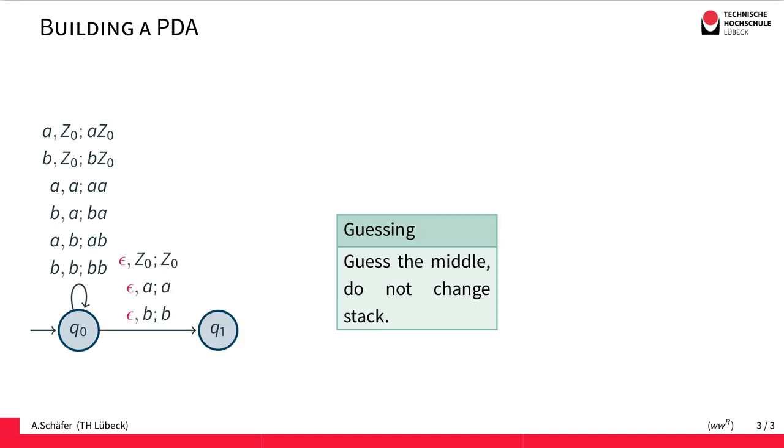At some point we have to guess the middle. So we change the state using an epsilon transition, reading nothing from the input. At some point we simply decide that it is time to change state and we don't change the stack here.